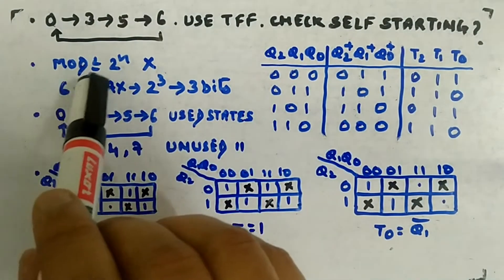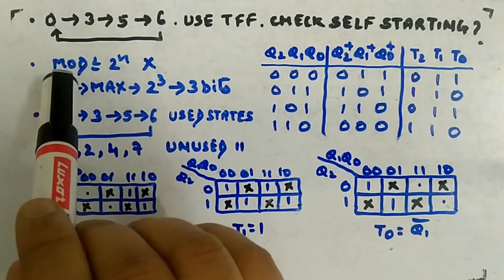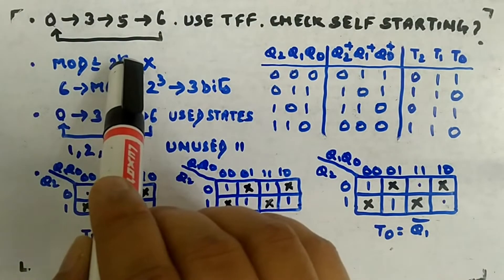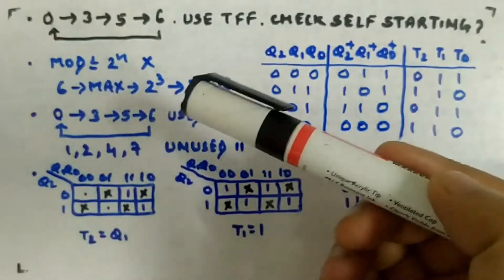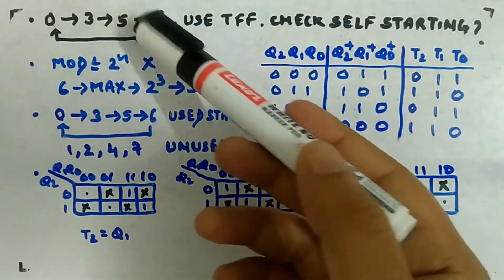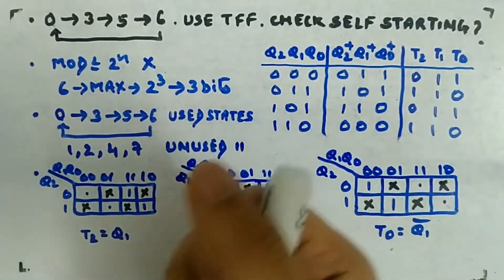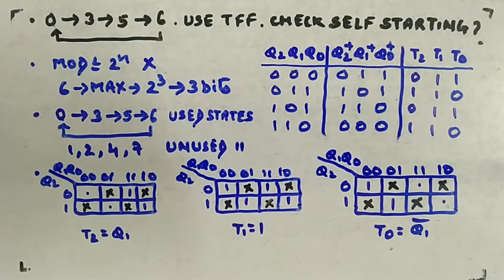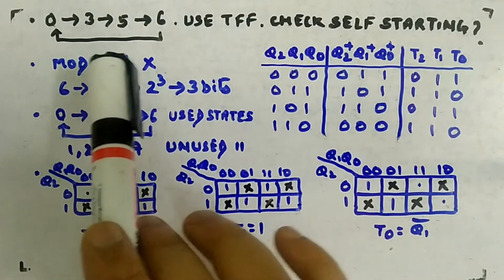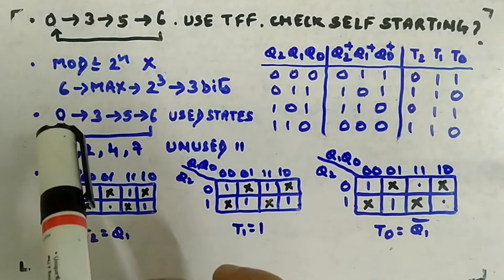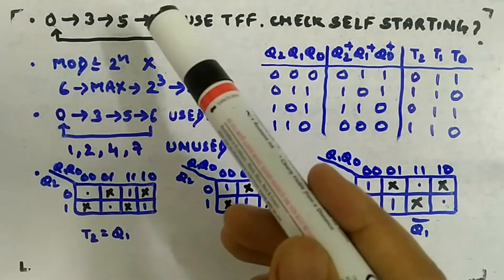The formula mod value ≤ 2^n fails here because there are only 4 states, so mod is 4 and n=2 would satisfy the equation. But you can't express 5 or 6 with 2 bits, so the formula fails. This formula works for asynchronous counters always, but for synchronous counters it doesn't always work.